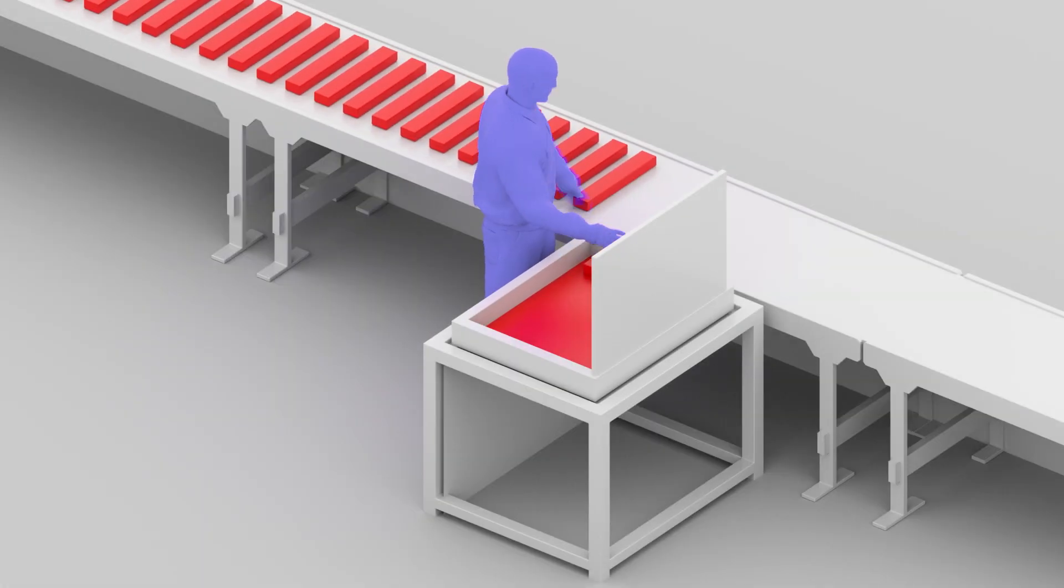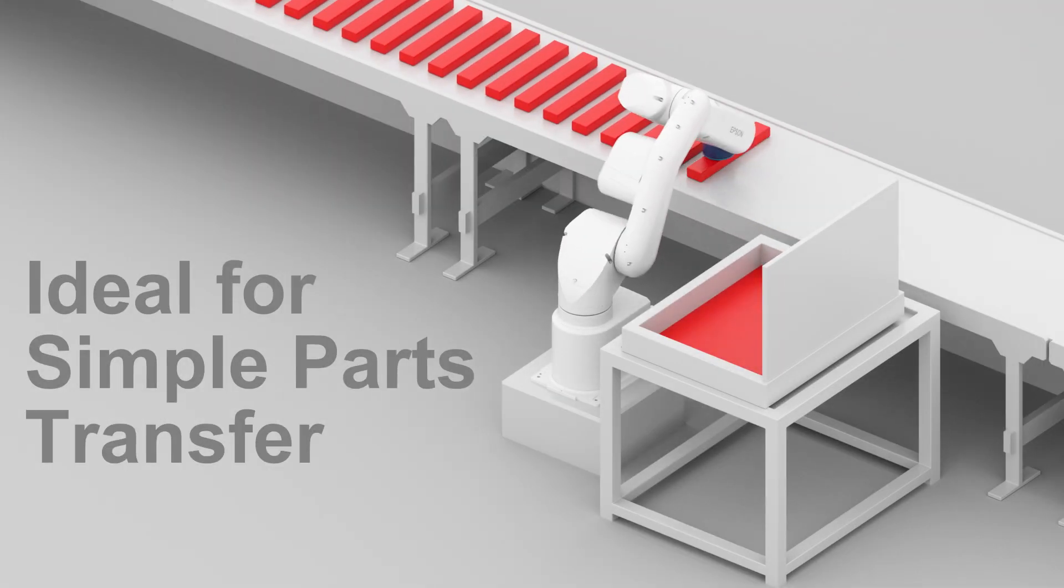Many factories currently use people for simple tasks such as material handling, parts transfer, and pallet loading. The VT6L is the perfect alternative. This game-changing innovation opens up a world of automation opportunities.